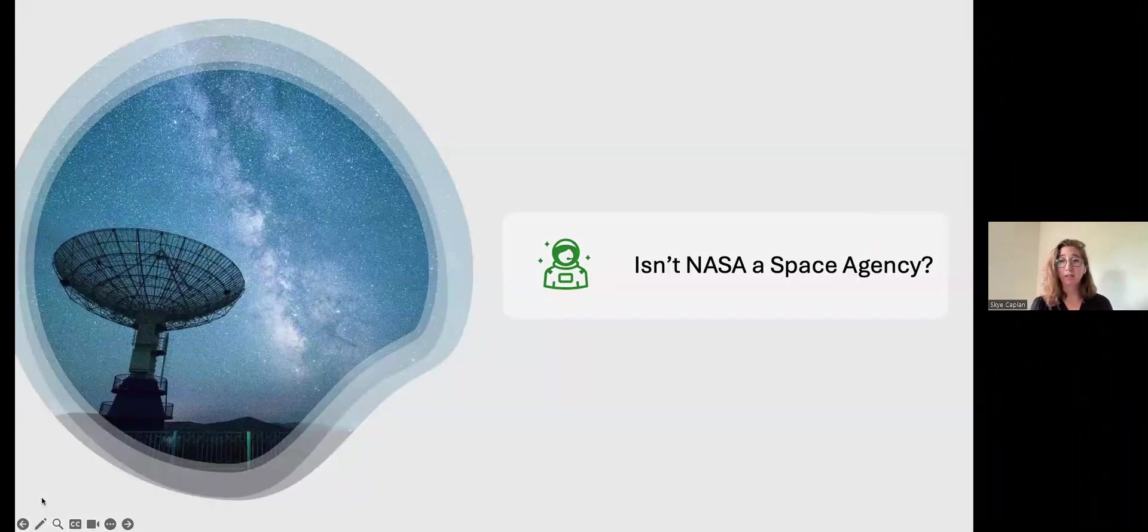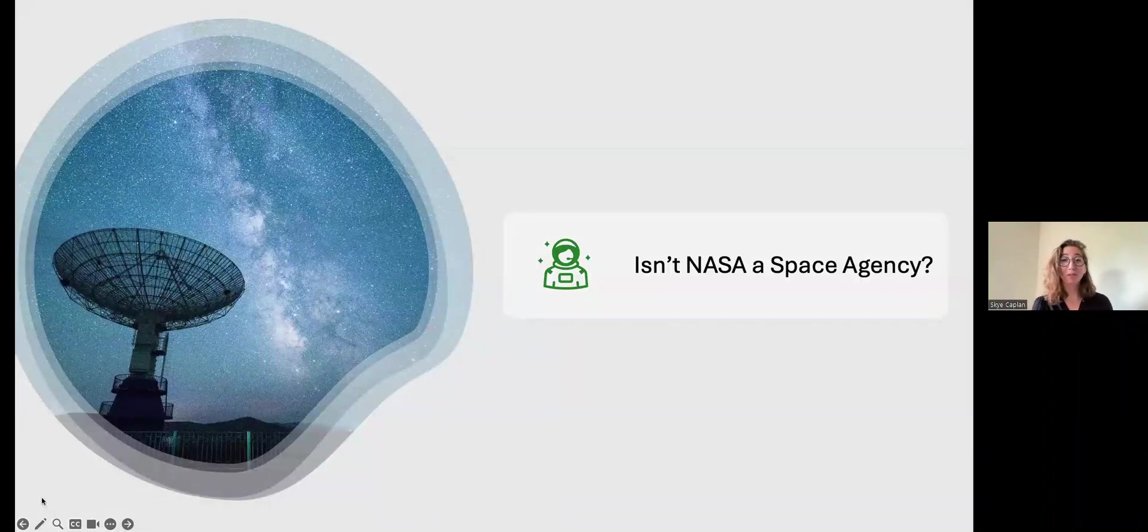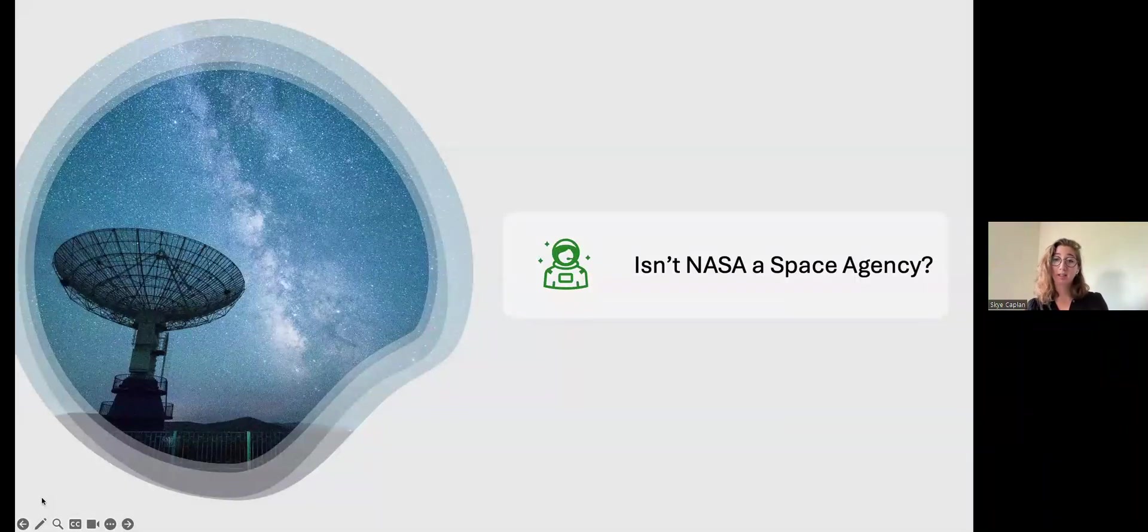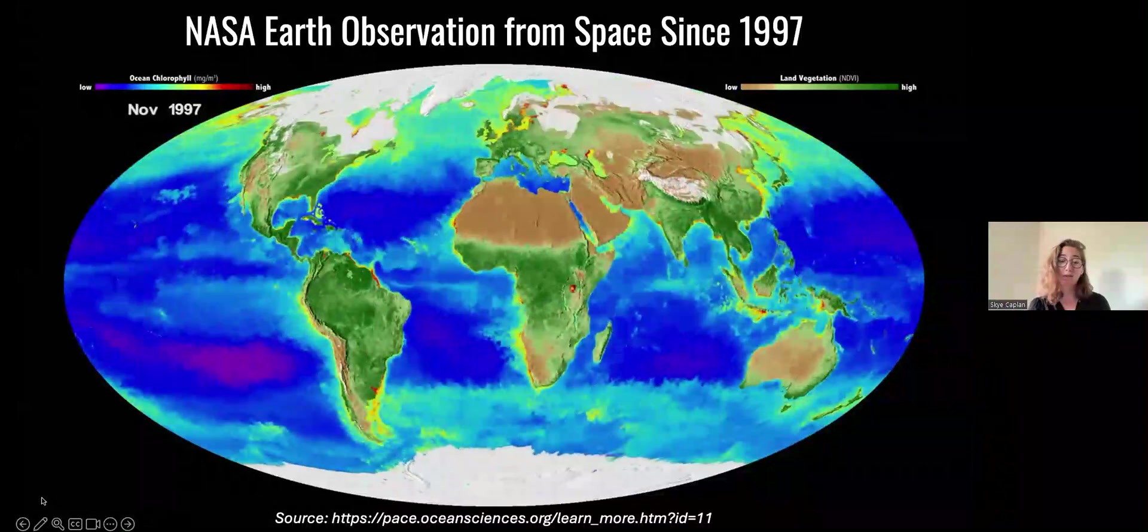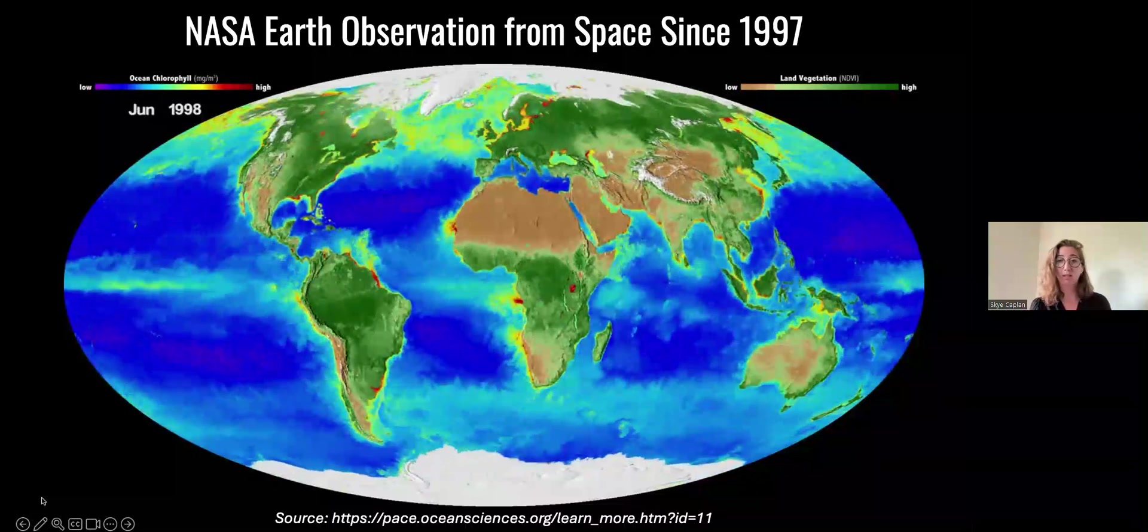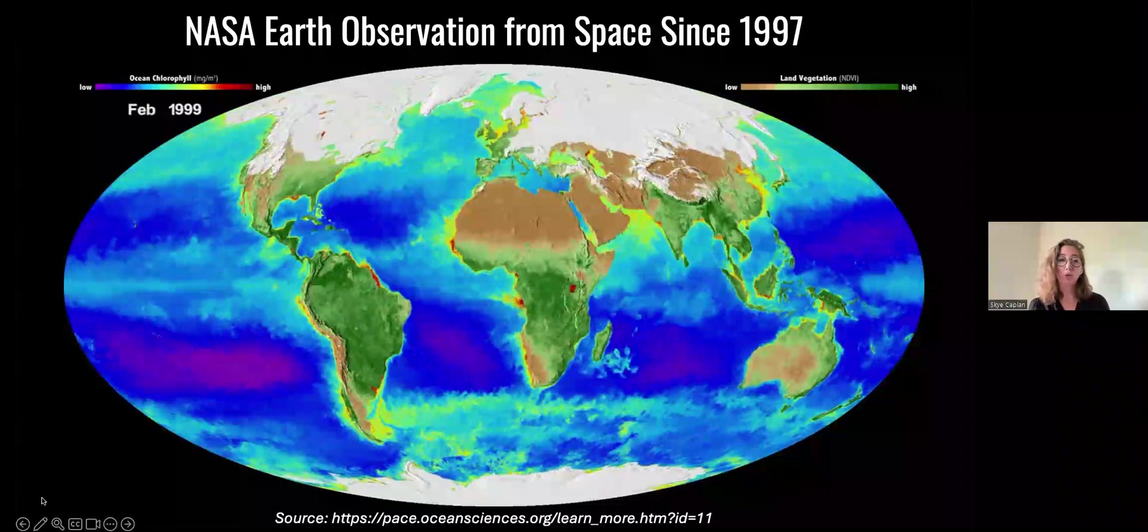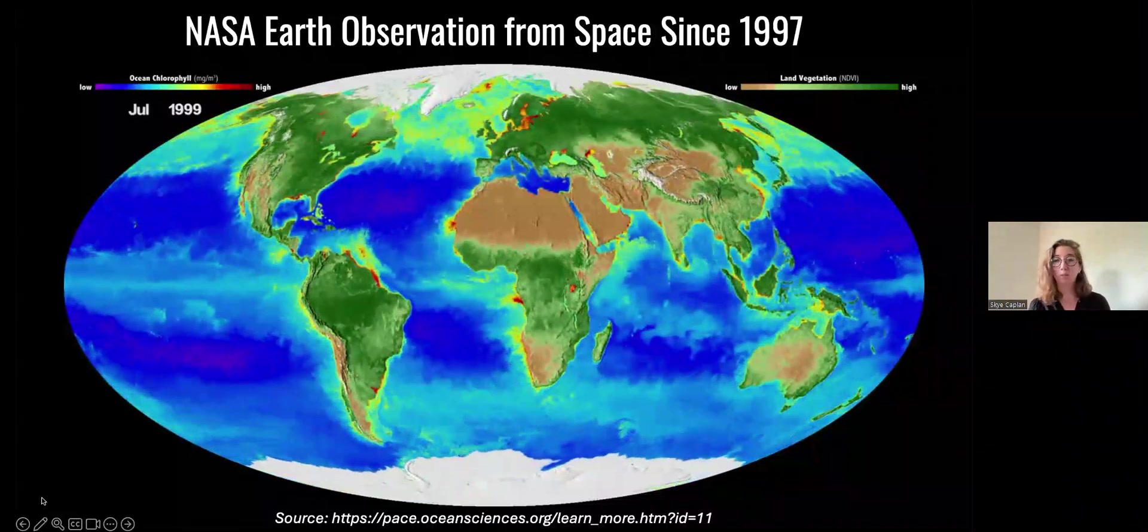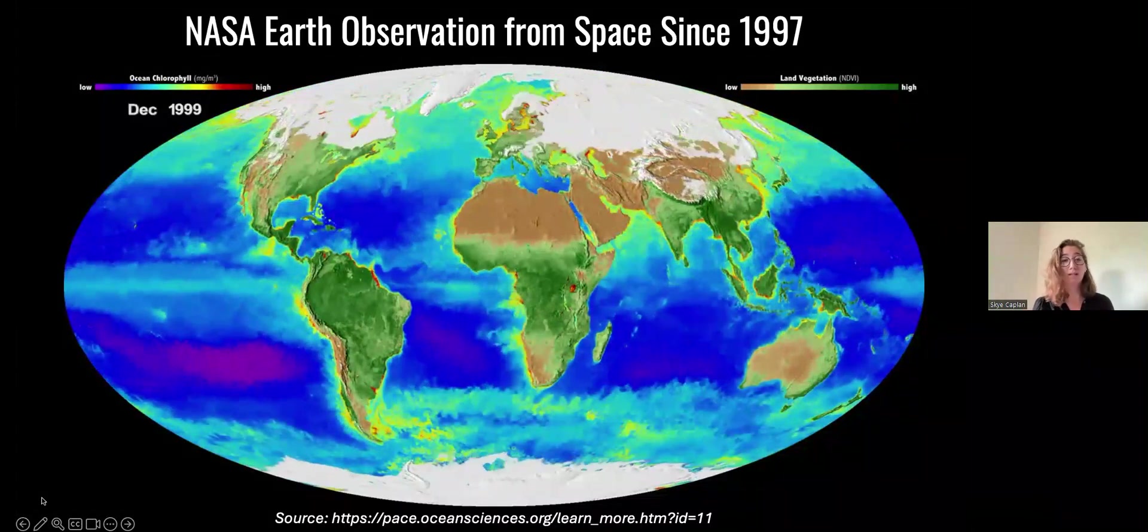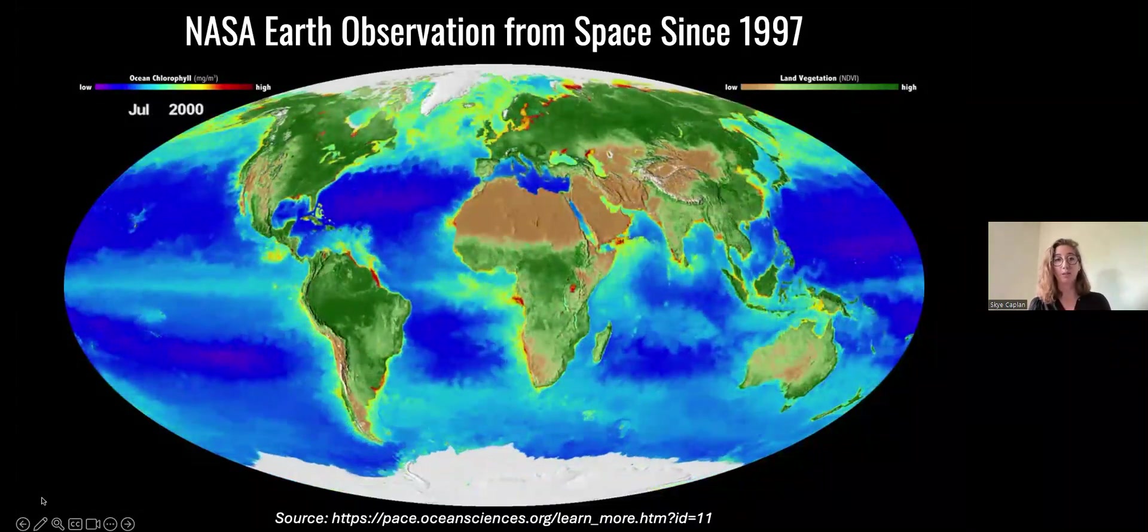So now you might be thinking that's all well and good, but don't you work at NASA? Isn't NASA supposed to look into space and not at Earth? And that would be a really fair comment. A lot of folks don't think that Earth is one of the planets that NASA even studies. But actually, NASA has a long history of Earth observation. This animation here is just one example of Earth science that NASA's been doing since 1997.